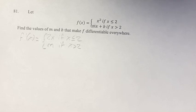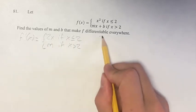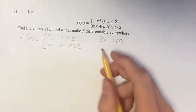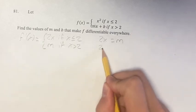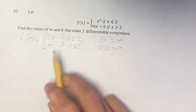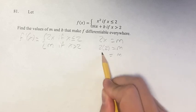We need f to be differentiable everywhere, so when x equals 2, 2x has to equal m. For that to be the case, 2 times 2 equals m, because here we're dealing with x equals 2. So m equals 4.